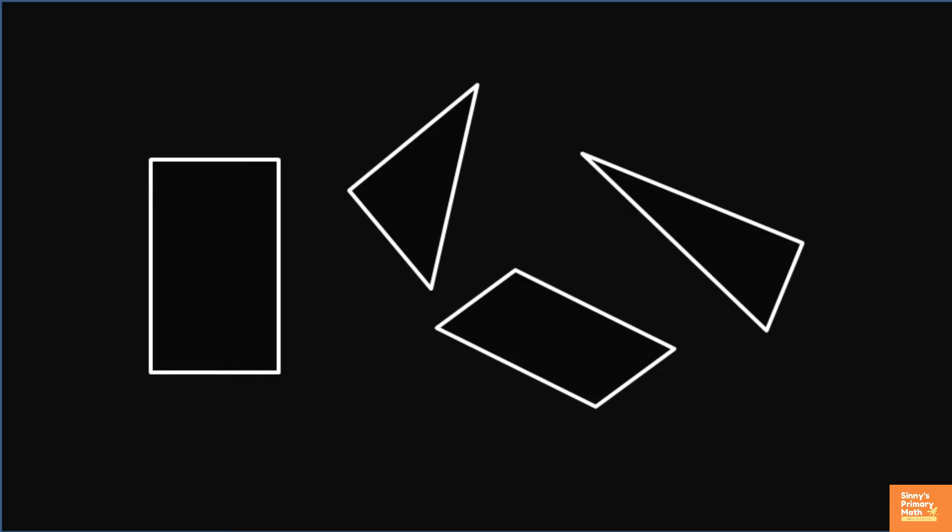Many children have problems in recognizing different geometrical shapes in non-standard orientation. For example, to them, a square is not a square if its base is not horizontal.